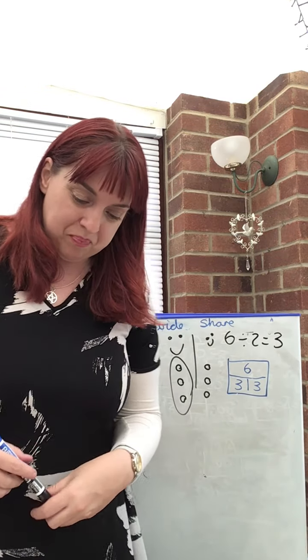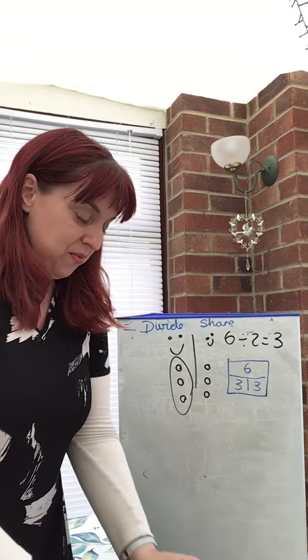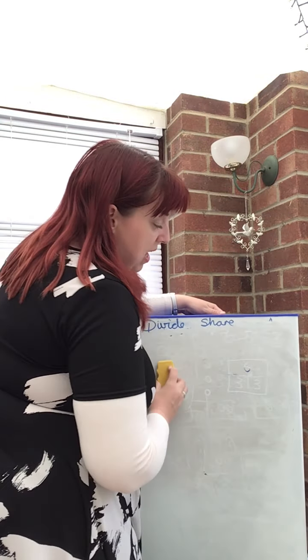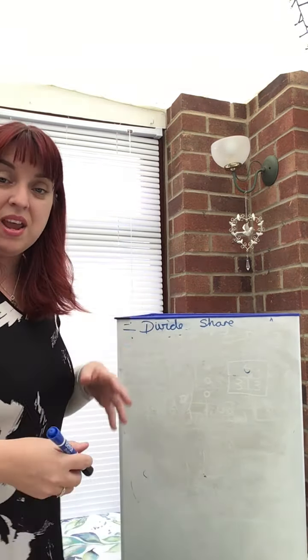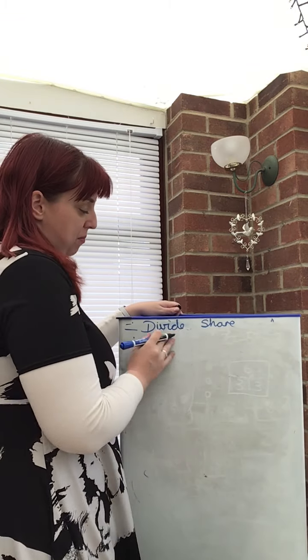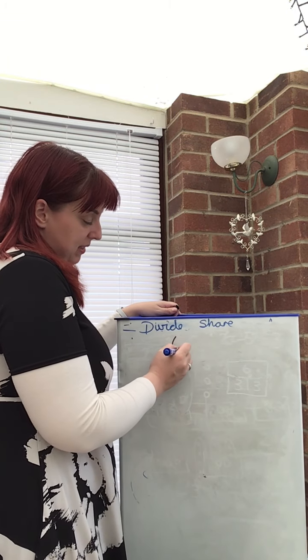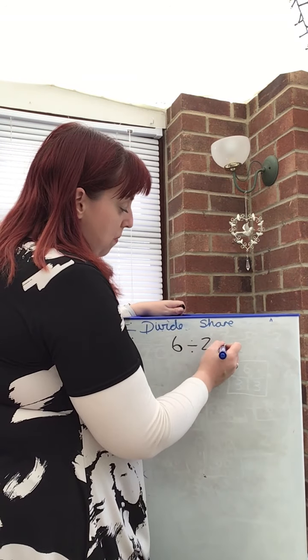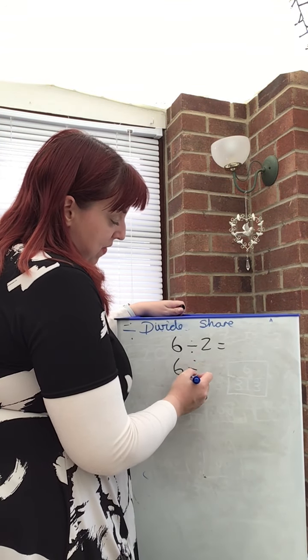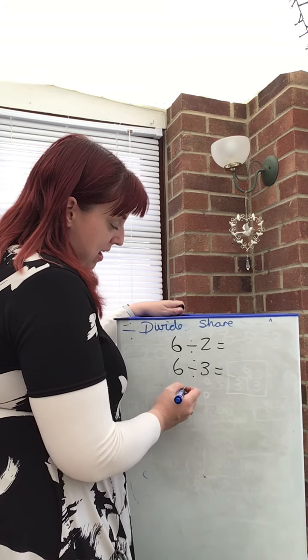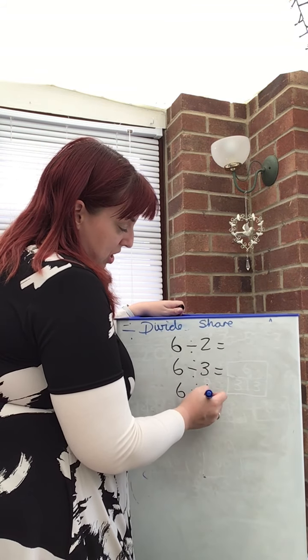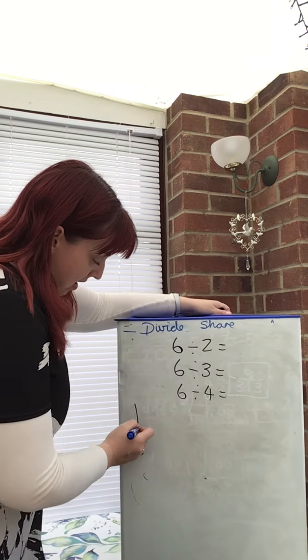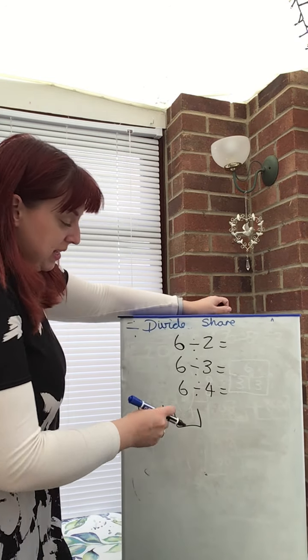So we can also then start to investigate different ways of sharing. So a really easy way to do this is just picking one number and sharing it into different groups. So for example, if I had my six, if I shared it, first of all, between two, six, investigate, can I share it between three, six, can I share it between four? Again, you can use equipment or you could do drawing.